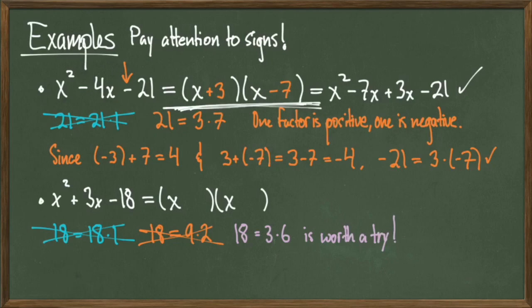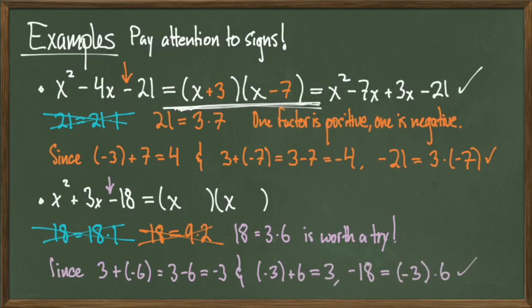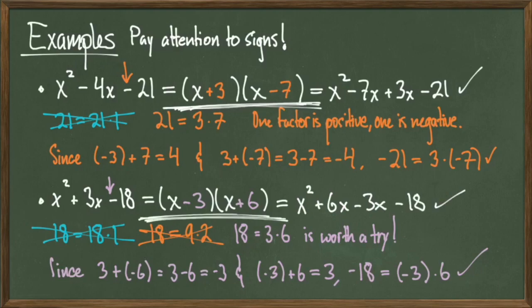I'm saying this because 18 ends up being a negative number in our polynomial, so exactly 1 of 3 or 6 should be negative. Like I did upstairs, I can try both possibilities. I know that 3 plus negative 6 is equal to minus 3, but negative 3 plus 6 is equal to positive 3. So I'm going to try 18 equals negative 3 times 6 as my factorization. When I plug these factors into my quantities upstairs and FOIL out, I get x squared plus 6x minus 3x minus 18, which simplifies to x squared plus 3x minus 18. Therefore, I have found the correct factorization of this polynomial.